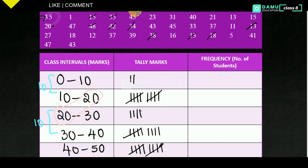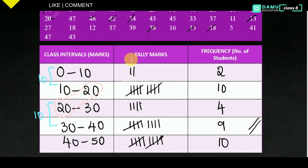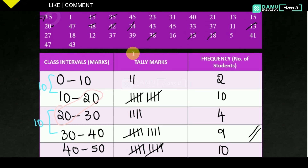The frequency values are: 0–10: 2, 10–20: 10, 20–30: 4, 30–40: 9, 40–50: 10. These are the things they asked. Thank you for watching, please subscribe.